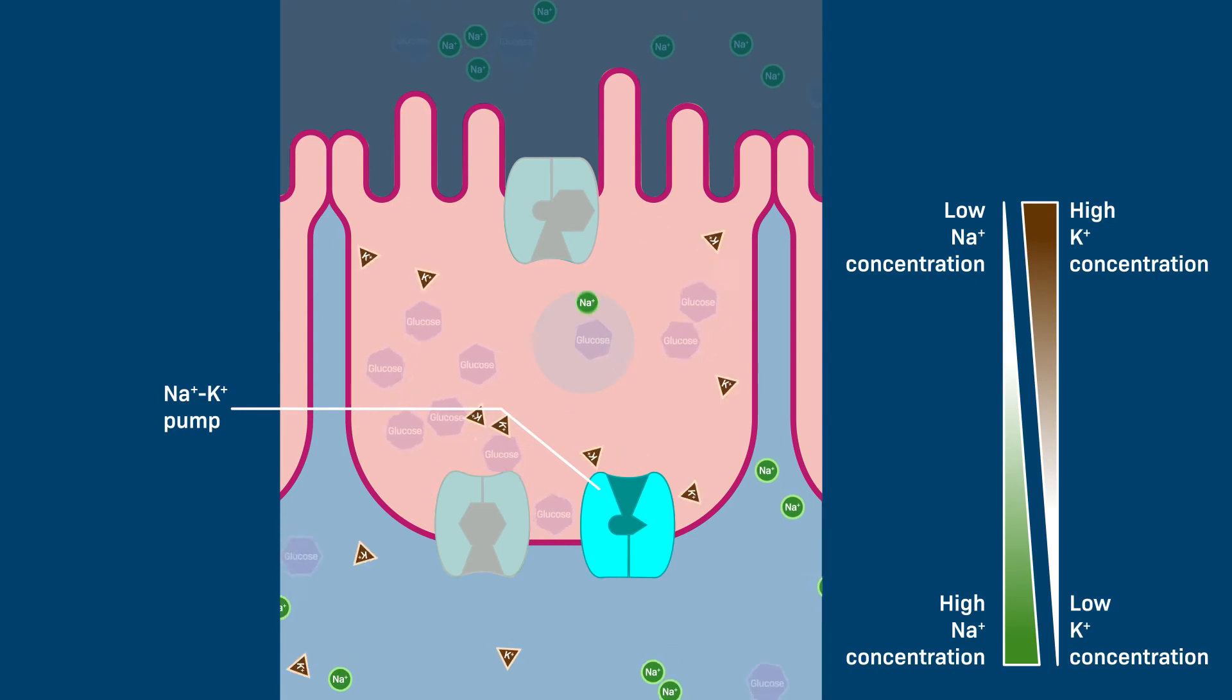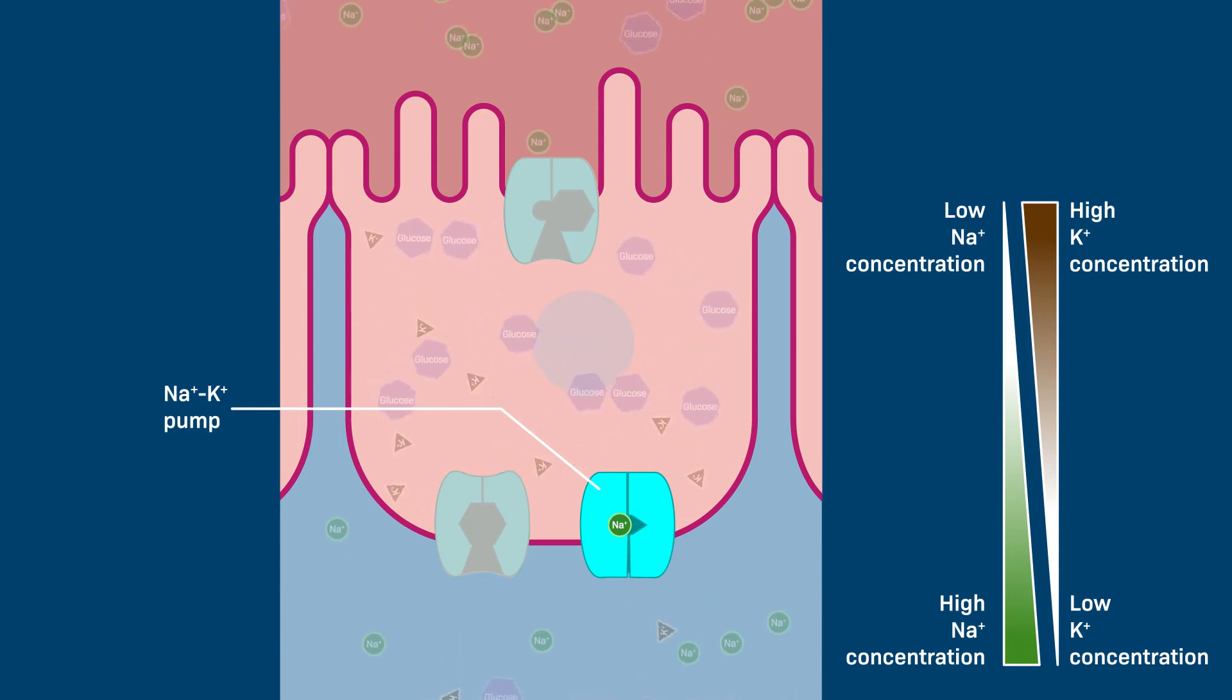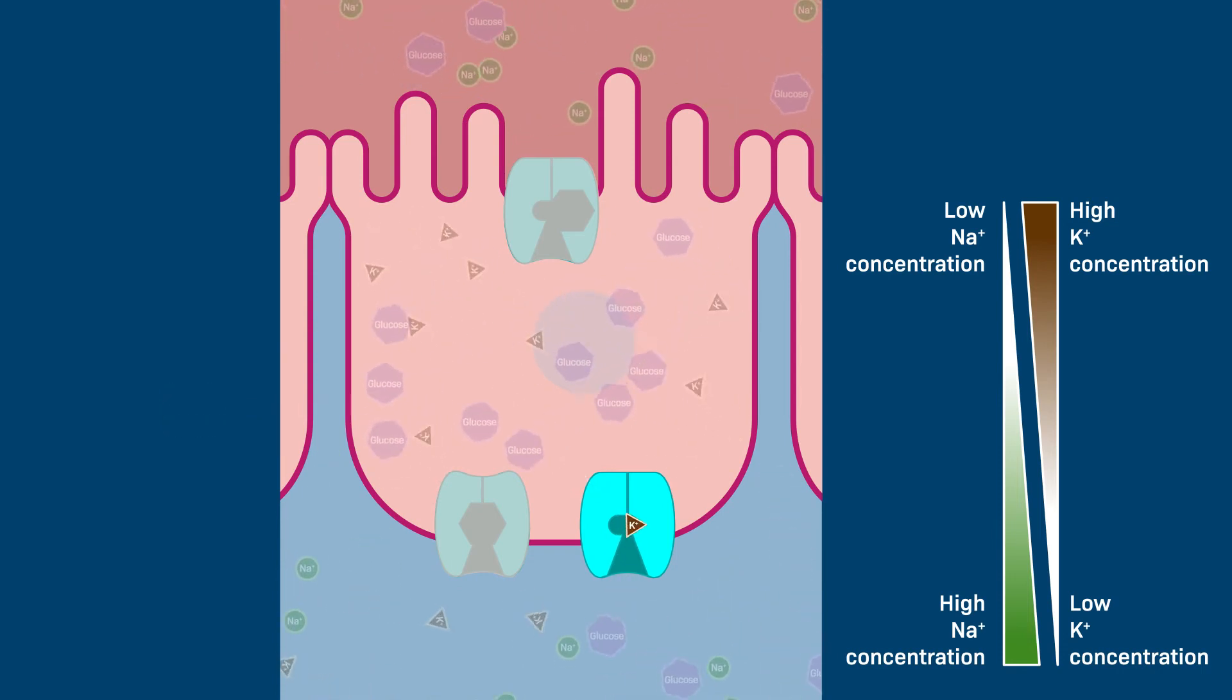The sodium gradient driving the glucose symport is maintained by the sodium-potassium pump, which keeps the internal concentration of sodium low and the external concentration of sodium high. The sodium-potassium pump hydrolyzes ATP to release the energy necessary to push sodium and potassium ions against their concentration gradients.